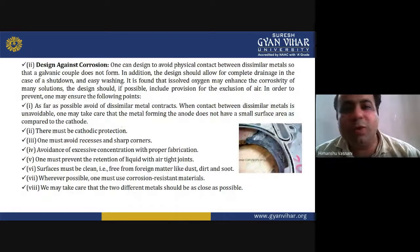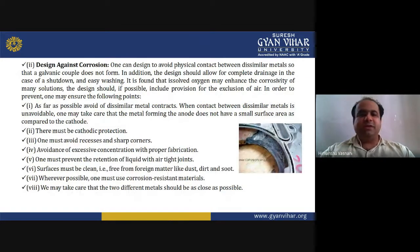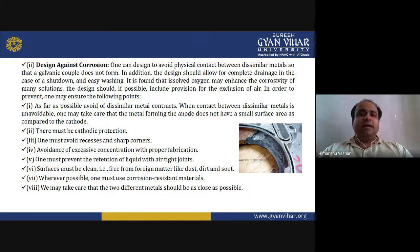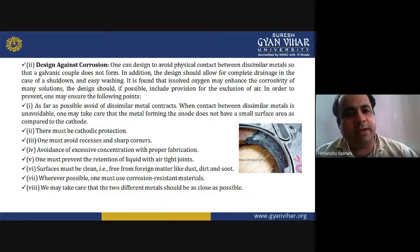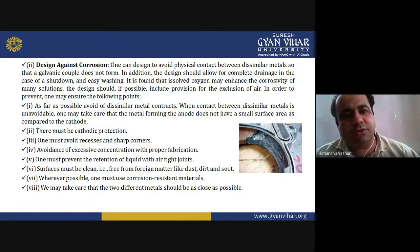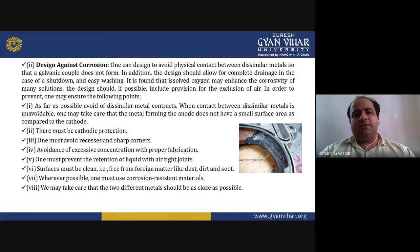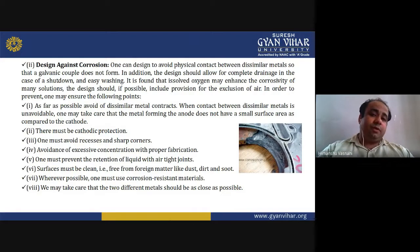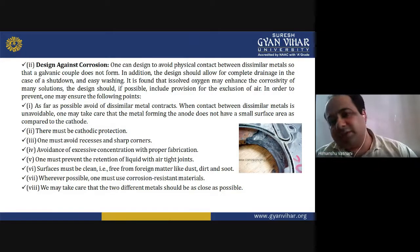Design against corrosion: one should design to avoid physical contact between dissimilar metals so that a galvanic couple does not form. The design should allow for complete drainage in case of shutdown and easy washing. It should include provisions for the exclusion of air, since dissolved oxygen may enhance the corrosivity of many solutions.